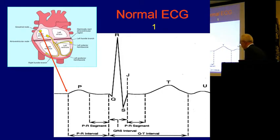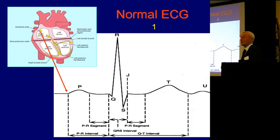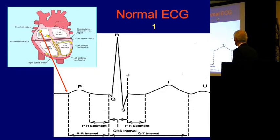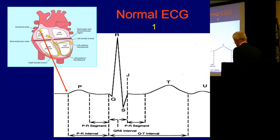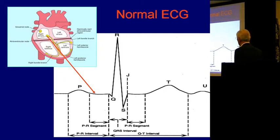We can start at the top with the sinoatrial node, which generates a wave. And if you look at the top right-hand corner of your automated ECG report, you will see a squiggle to tell you about the P wave, whether it's there or not. The wave then passes to the AV node, which introduces a delay. This is the calming down bit. It's the PR segment.